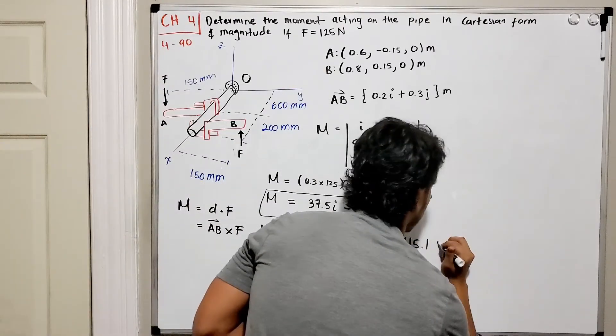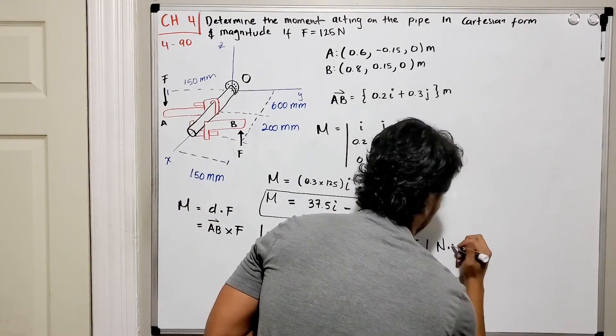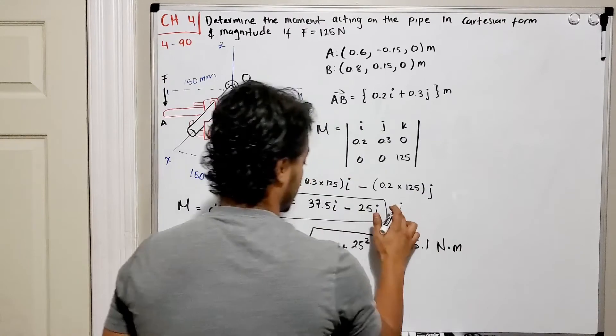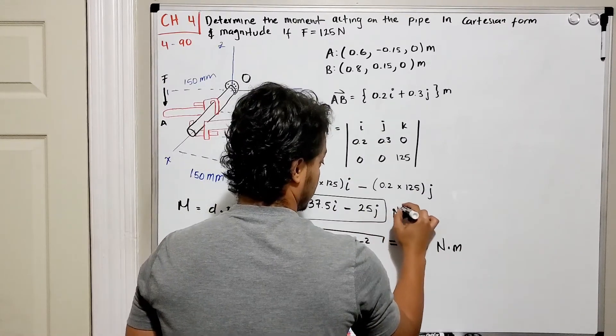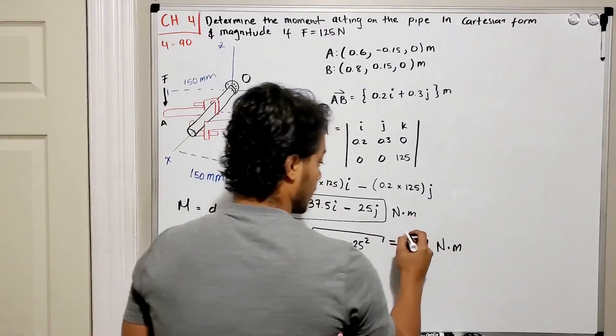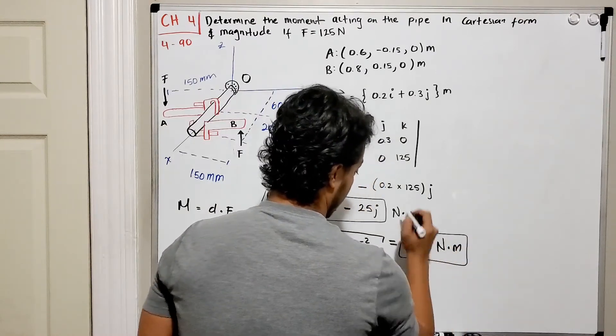And that gives me a total of 45.1, and what are the units for these guys? It's newtons per meter, same for these guys over here, newtons per meter, so this is the magnitude.